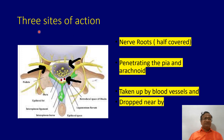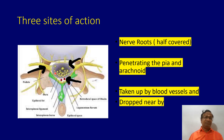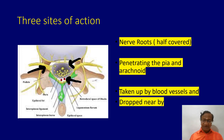There are three sites of action. First are the nerve roots, which are partly uncovered. Second, the drug penetrates the pia and arachnoid and goes into the subarachnoid space. Third, it gets absorbed by blood vessels, which carry it elsewhere. So: the uncovered epidural nerve root, going into the subarachnoid space, and uptake by blood vessels and delivery nearby.